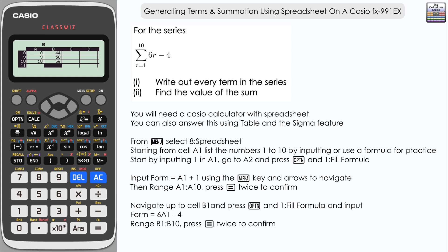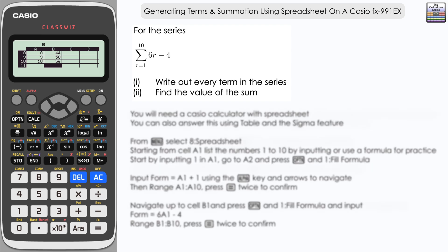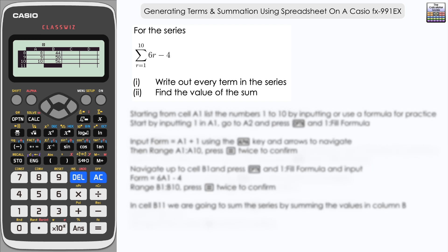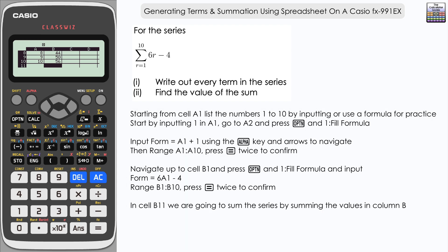Now we want to stay on the cell just below our series there, B11 in this case. We're going to put the sum of our series here and we're literally going to just add up all of the values that are listed in column B. Now let's access the sum feature, so it's option once again.